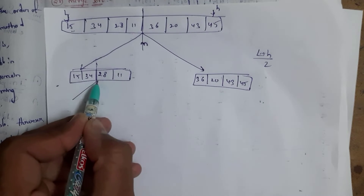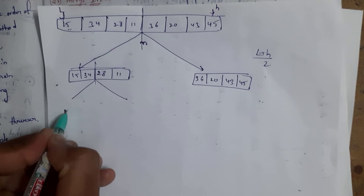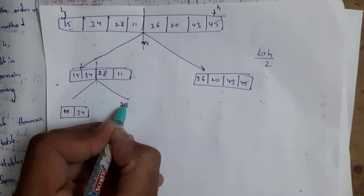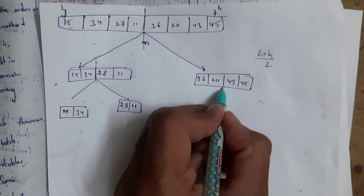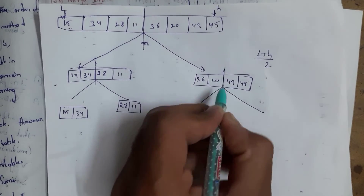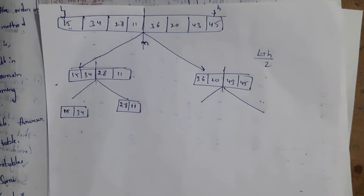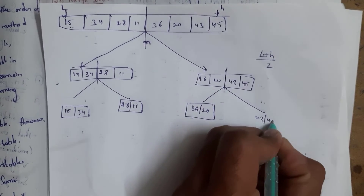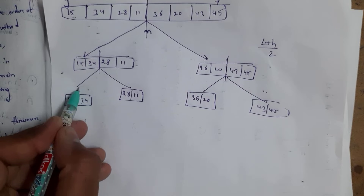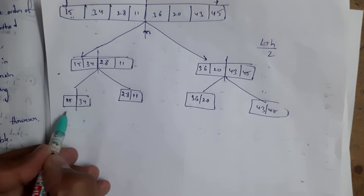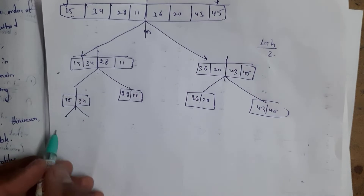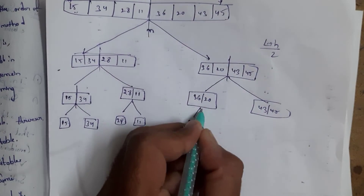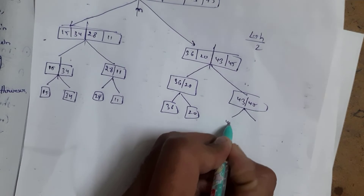Again we divide the four elements into two halves: 15, 34 on one side and 28, 11 on the other. Similarly for the second group: 36, 20 on one side and 43, 45 on the other. Then we divide the two-element groups into individual elements: 15, 34, 28, 11, 36, 20, 43, and 45.